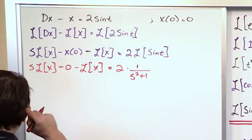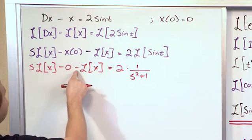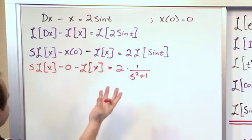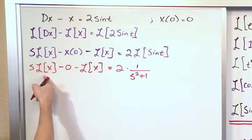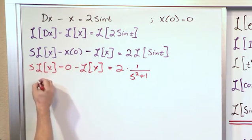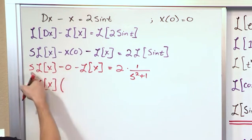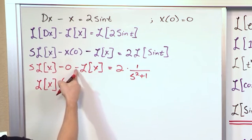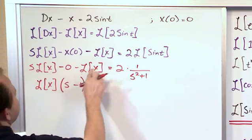And so what we're going to do now is we will notice that this zero basically just drops away. So what we're going to have then is we'll factor out a Laplace transform on the left. So we'll have Laplace transform of x, open in parentheses, we'll have s, and then we'll have minus one. This basically is simplifying this.